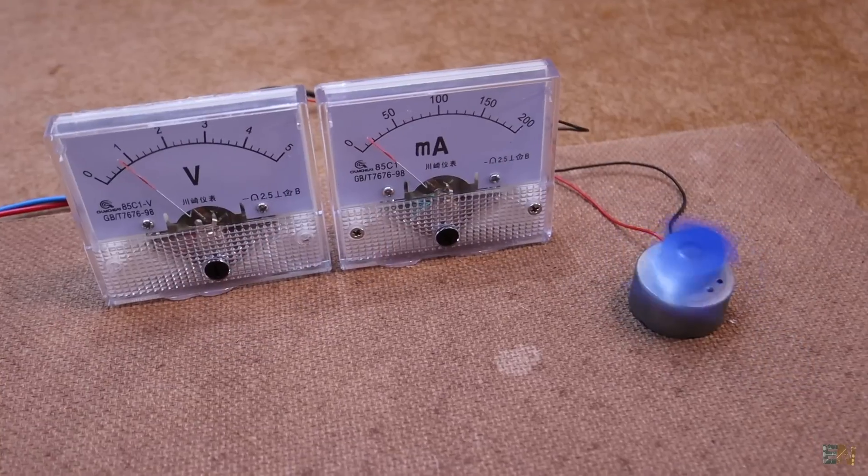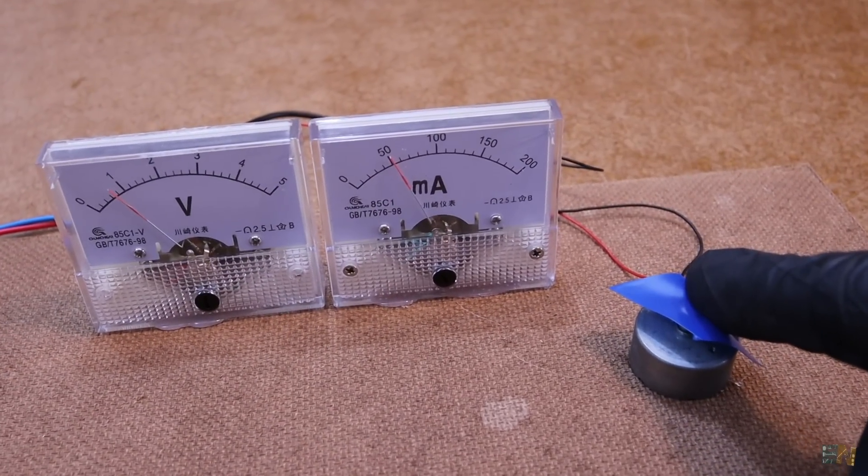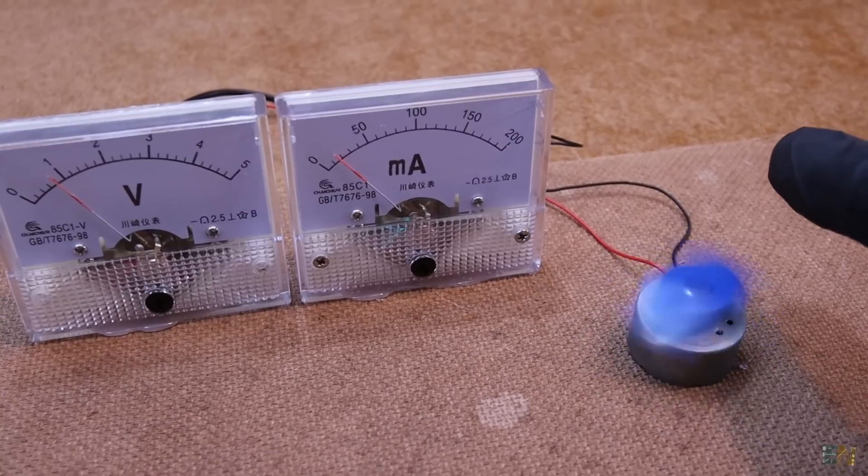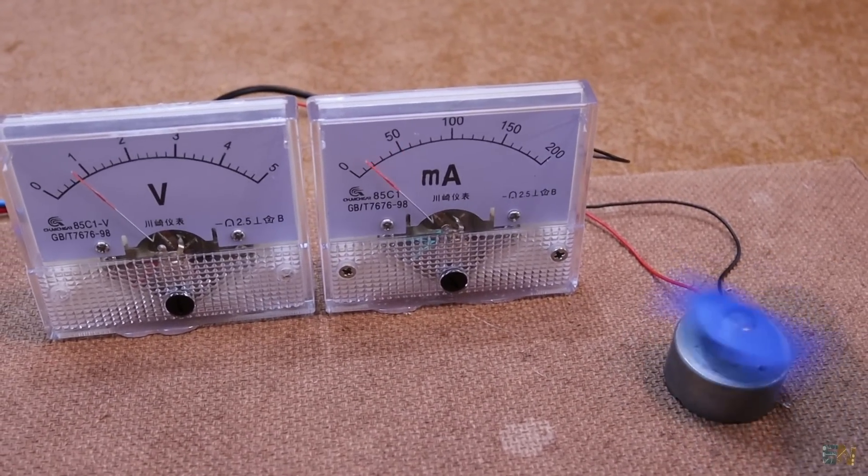I measure a current flow of around 20mA without a load, but when I stop the motor with my hand, we get up to 50mA at a voltage of 1V. So that's around 50mW of power.